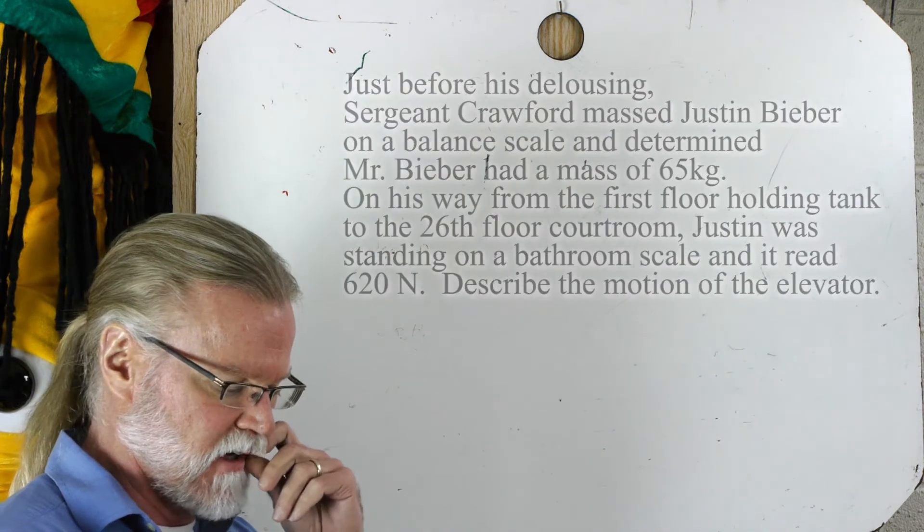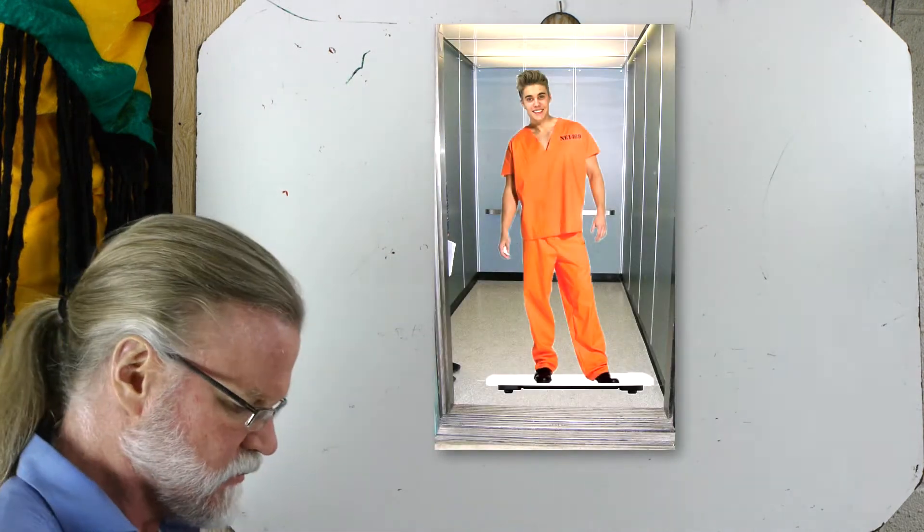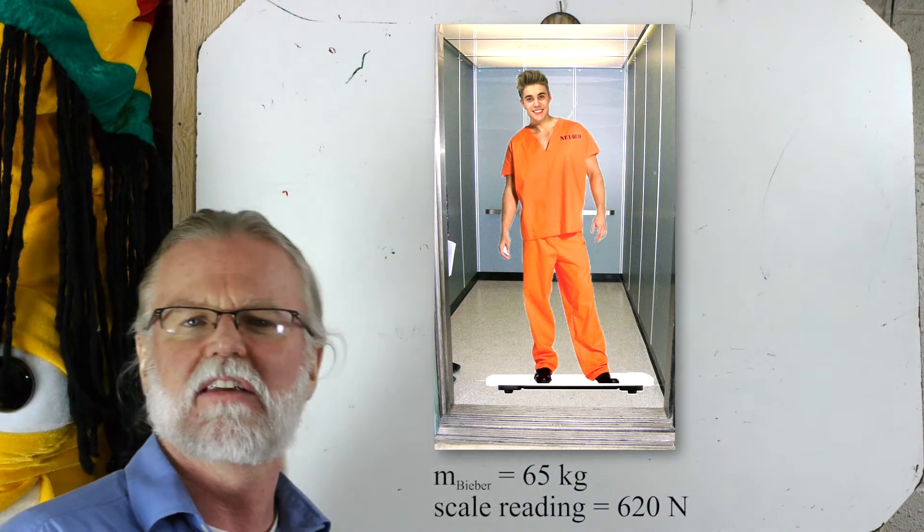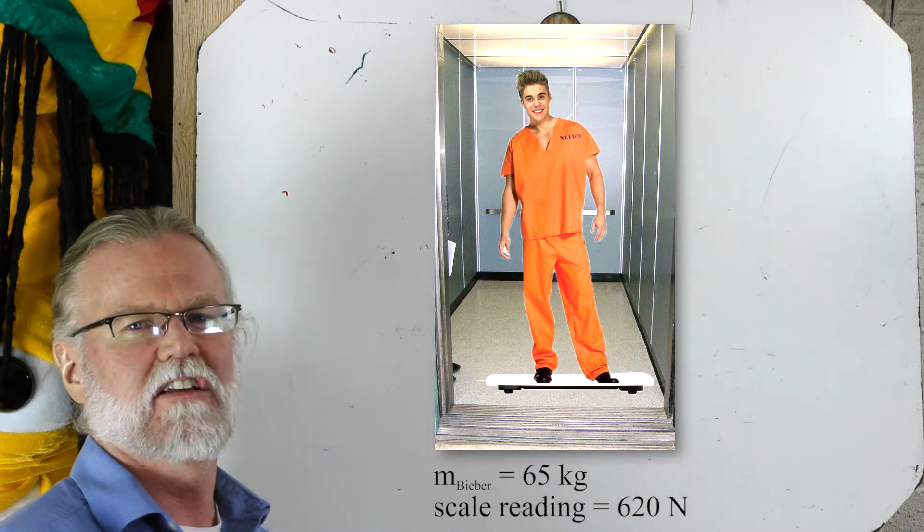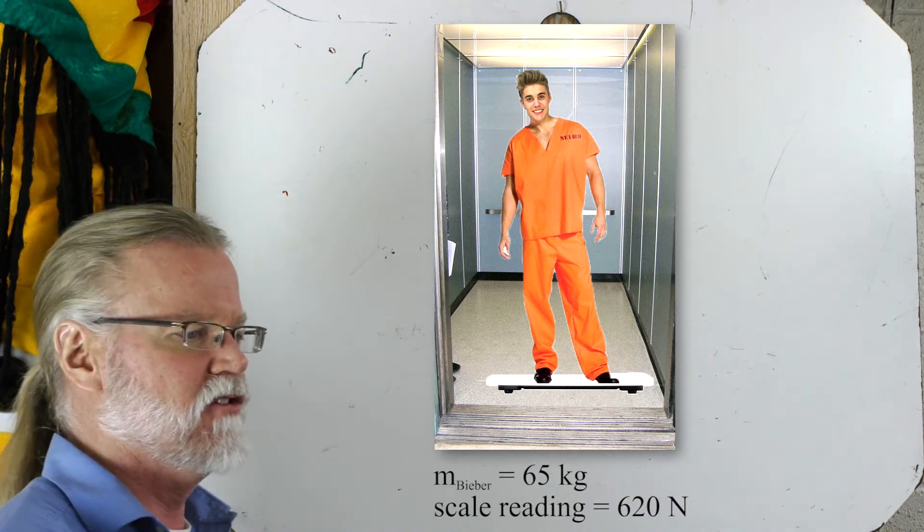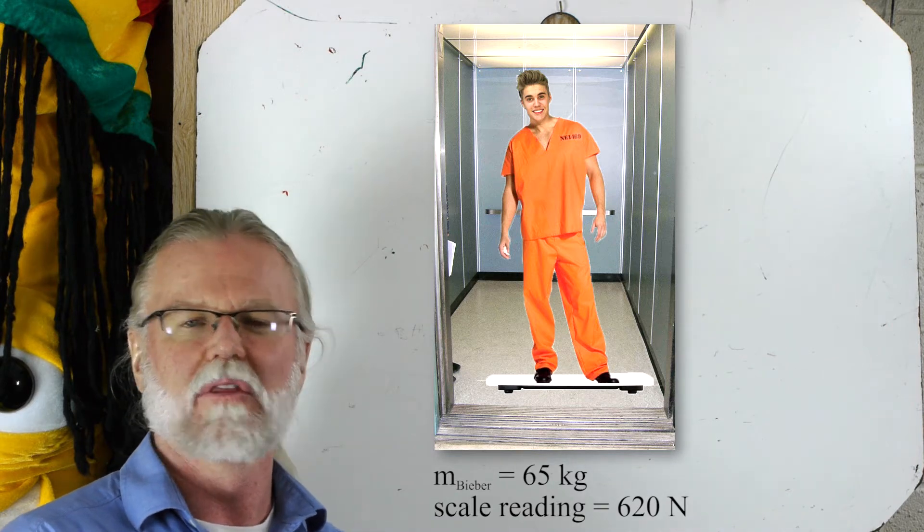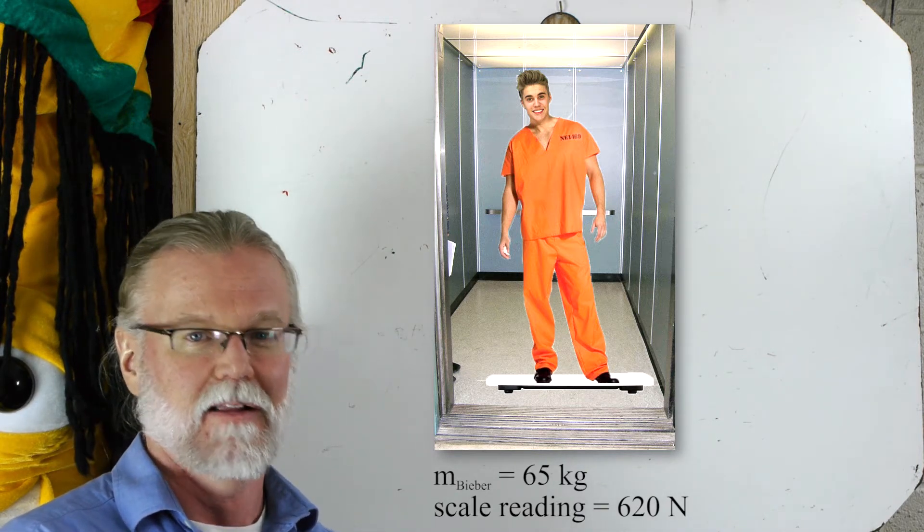So Justin Bieber's on an elevator. He has a mass of 65 kilograms and the scale he's standing on reads 620 newtons. Why don't you describe exactly what the elevator is doing with as much detail as possible. I'll give you a moment.